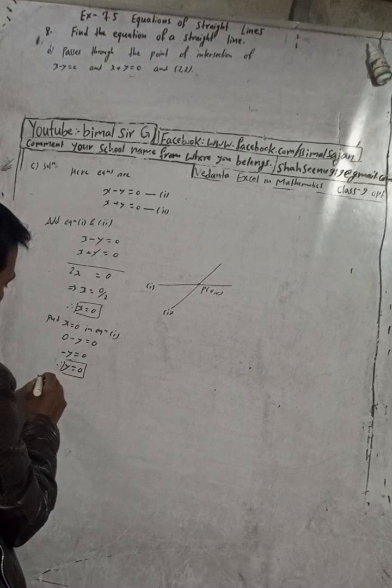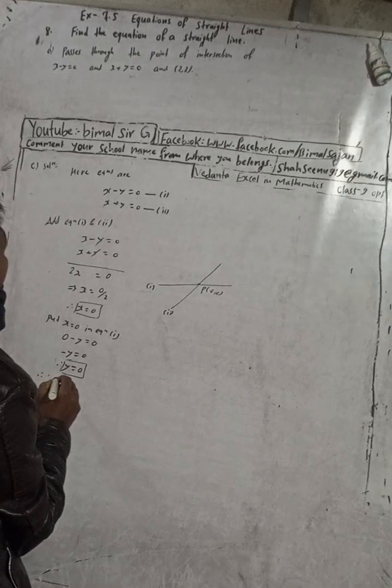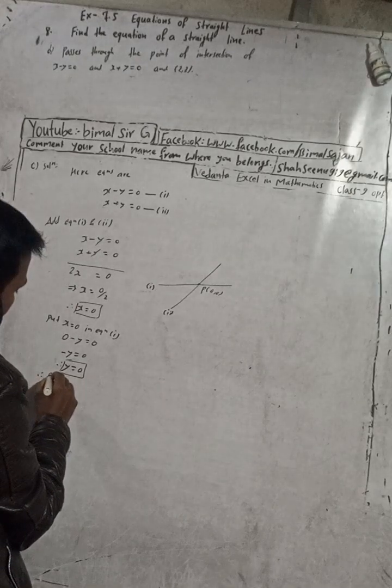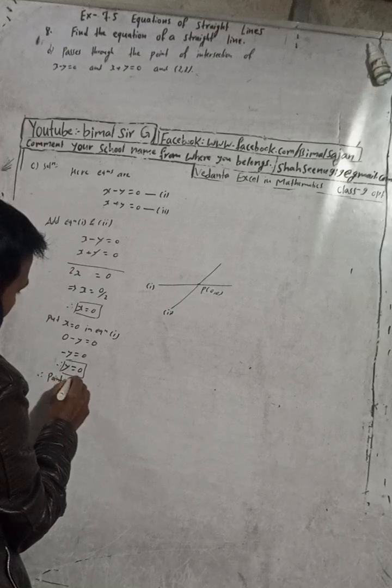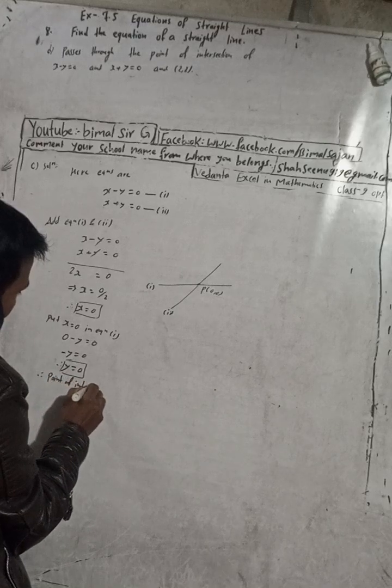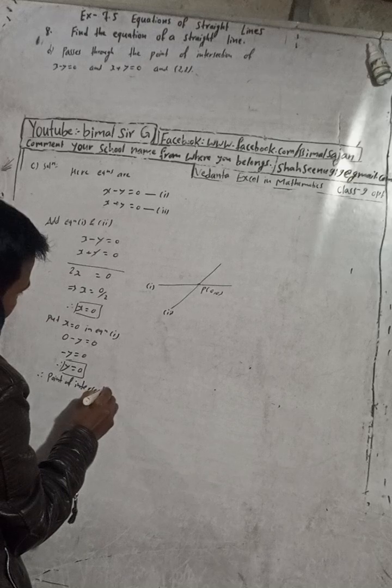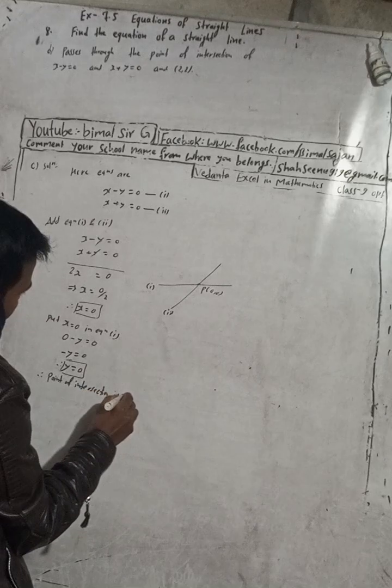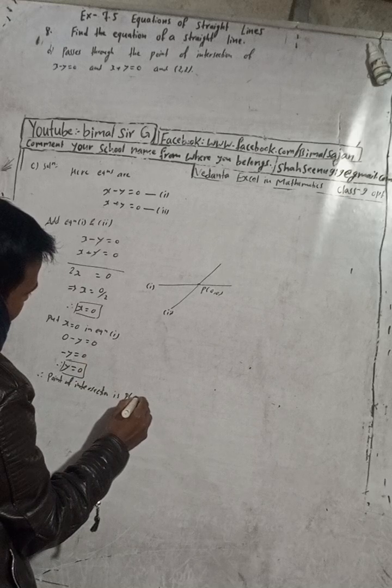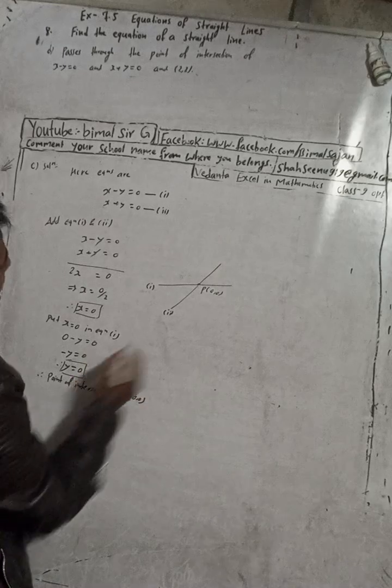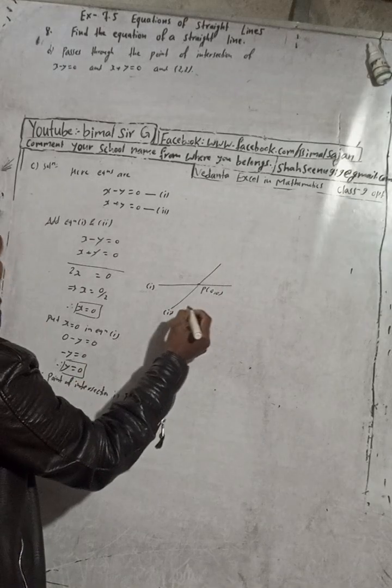Therefore the point of intersection is P(0, 0). Now this is the point of intersection, 0, 0.